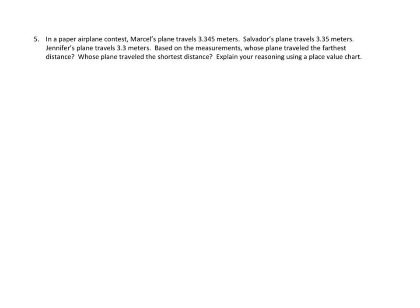Problem number five. Oh, a word problem. So, we're going to use our read, draw, write strategy. Let's go with the reading. In a paper airplane contest, Marcel's plane travels three point three four five, or three and three hundred forty-five thousandths meters. Salvador's plane travels three point three five, or three and thirty-five hundredths meters. Jennifer's plane travels three point three meters, or three and three-tenths meters. Based on the measurements, whose plane traveled the farthest distance? Whose plane traveled the shortest distance? Explain your reasoning using a place value chart. Hmm.